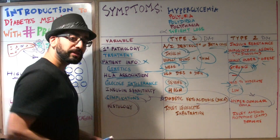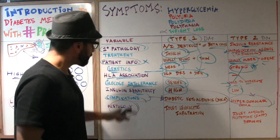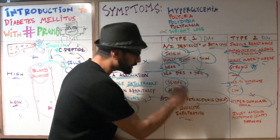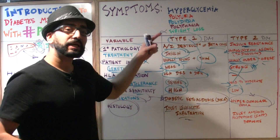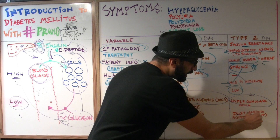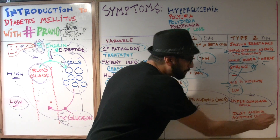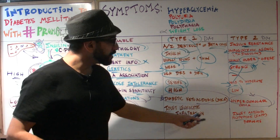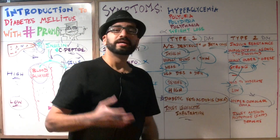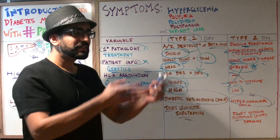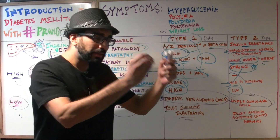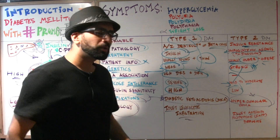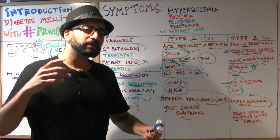Lastly, pay attention to the histology. For type 1 diabetes we have islet leukocyte infiltration. For type 2 diabetes we have islet amyloid polypeptide deposits. This is going to be on your exams — these are the things that will give you the marks. When you see those exam questions you'll quickly pick the answer and move to the next question, saving yourself time and stress.